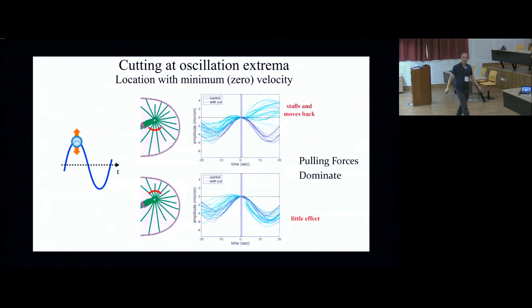So let's go to the peak of the oscillation. So at the peak of the oscillation, you have zero velocity, so the forces should all be in balance above and below on the centrosome. If you cut below when it's at the peak, then it just stalls and it moves back up towards the top. On the other hand, if you cut above, again, it has very little effect. When it's reached its peak and it's just about to head back down. So again, that would seem to indicate that at this stage in the oscillation, again, pulling forces dominate.